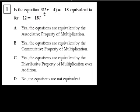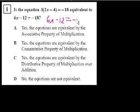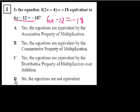So let's think about this. If we just distribute this 3, what do we get? 3 times 2x is 6x, 3 times minus 4 is minus 12, and that of course is equal to minus 18. So sure, they're the same thing. If you just distribute the 3 over the 2x minus 4, you get 6x minus 12. So the answer is definitely yes.